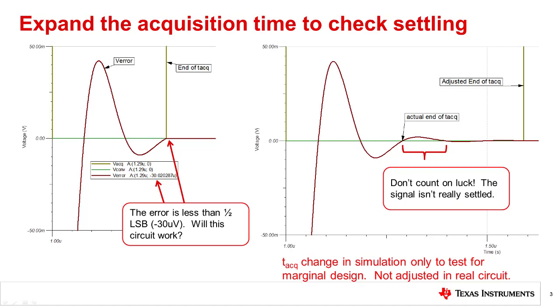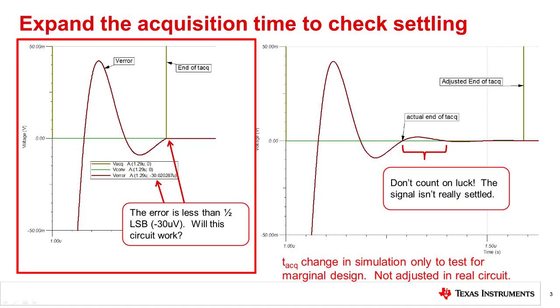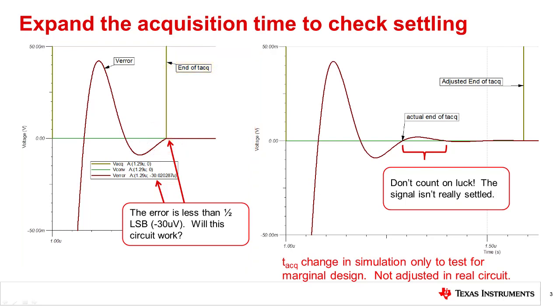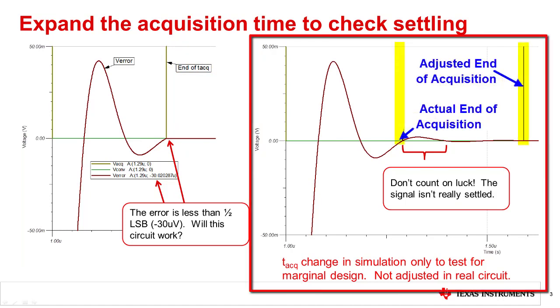One common test is to temporarily increase the acquisition time to confirm that the error is really settled. The point here is that it is possible for the error settling waveform to coincidentally pass through zero at the end of the acquisition period. The simulation results on the left show this case. The settling for this example appears to be good as the final error is inside the error target. However, if you take the same circuit and expand the acquisition window, you will see that the signal isn't really settled. You can see this in the figure on the right.